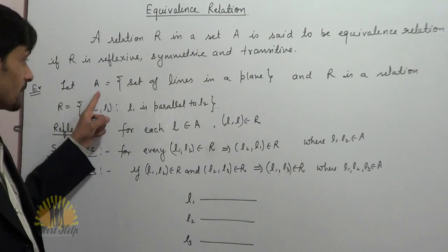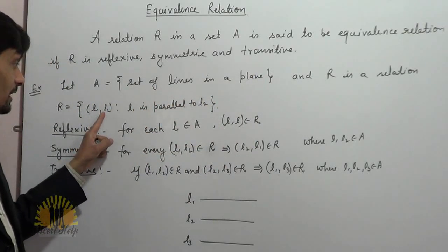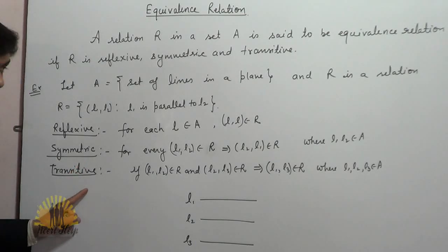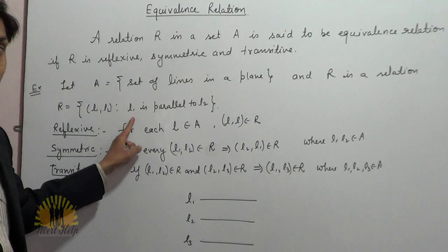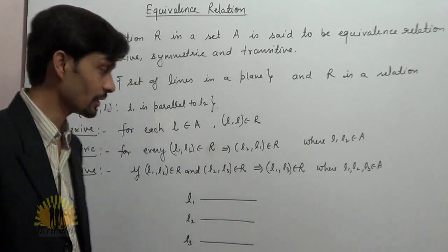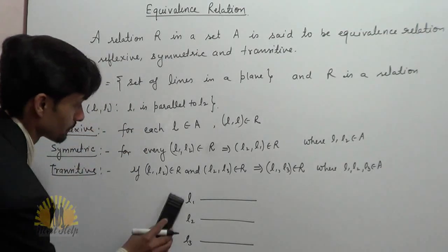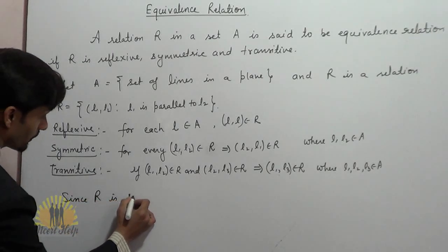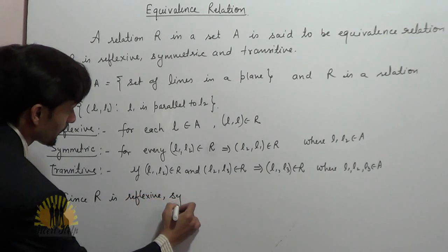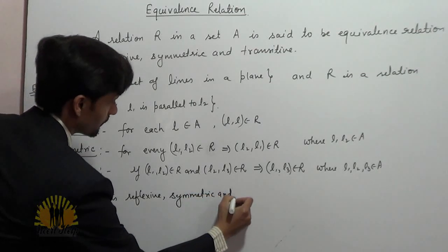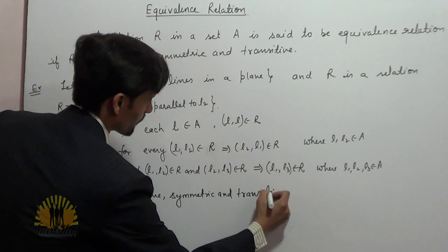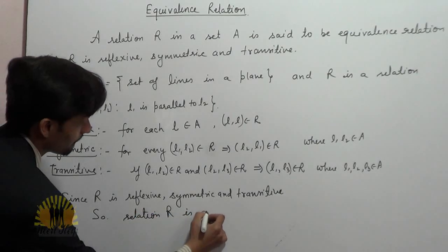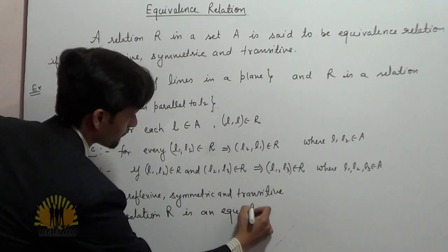So here, A contains the set of lines in a plane and R is a relation defined as (L1,L2) belongs to R where L1 is parallel to L2. Then it is reflexive, symmetric, as well as transitive. So in this given example, this relation R is an equivalence relation, since R is reflexive, symmetric, and transitive. Therefore, relation R is an equivalence relation.